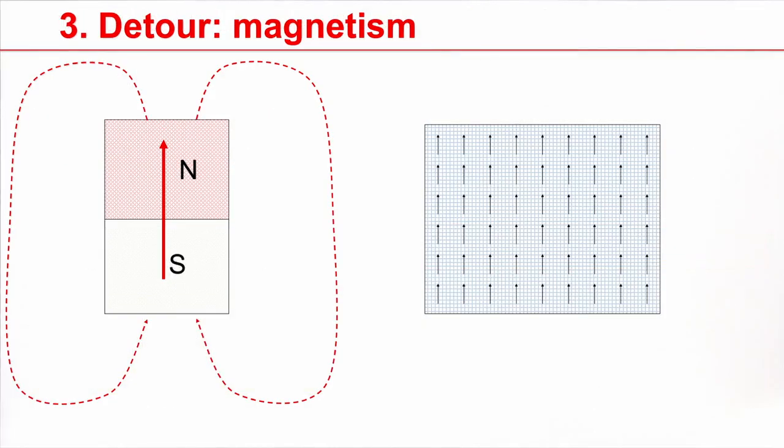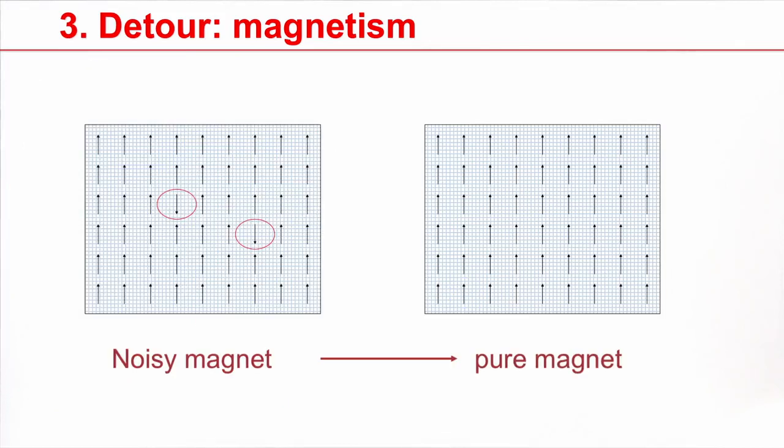You may remember that a big magnet consists of many small magnets, in the sense that there are little needles inside the material. In a very strong magnet, all these needles will point in the same direction. Now it may happen that one or few needles point in the wrong direction, but then the interaction between these different needles reconstitutes a pure magnet.